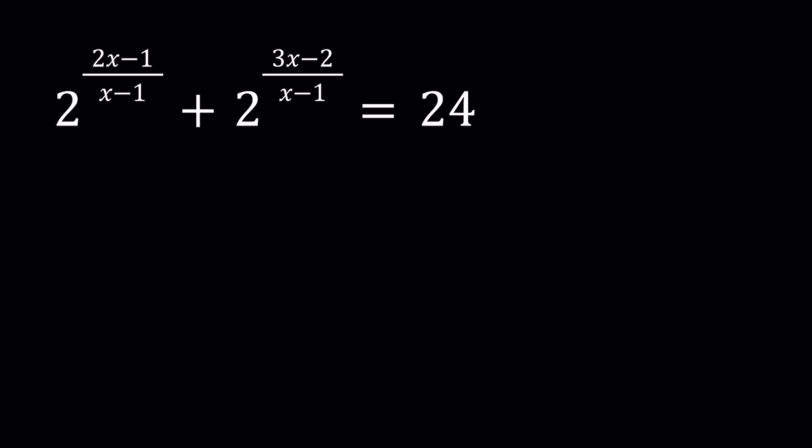We have 2 to the power 2x minus 1 over x minus 1 plus 2 to the power 3x minus 2 over x minus 1 equals 24, and we're looking for x values.